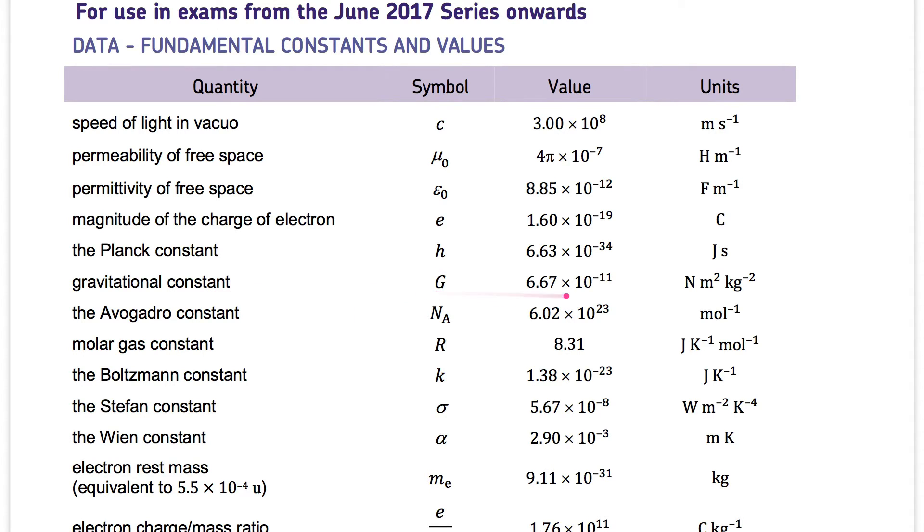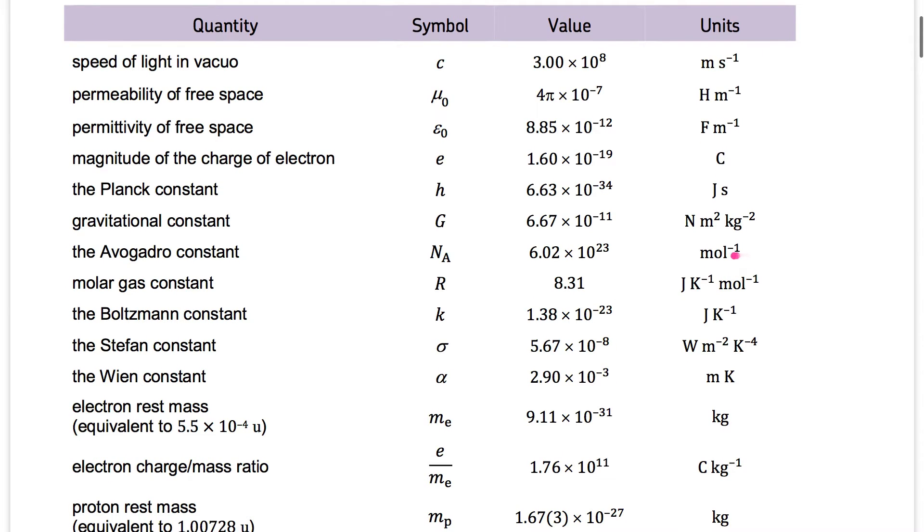The gravitational constant capital G is 6.67 times 10 to power minus 11 newtons where we have kg squared. Then the Avogadro constant is N with the A subscript at the bottom of the N. And we'll have different videos to talk about exactly what they mean.